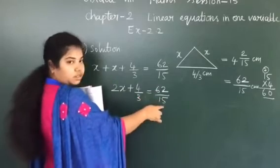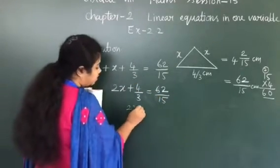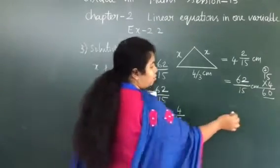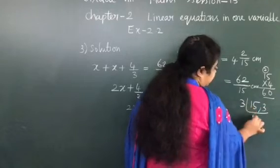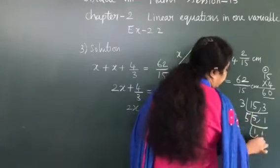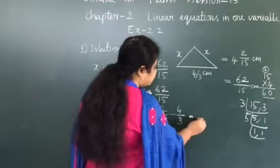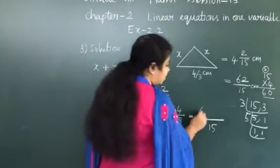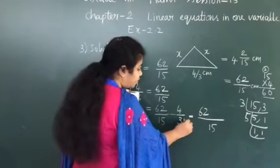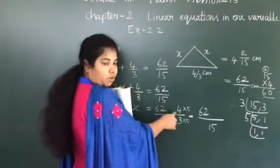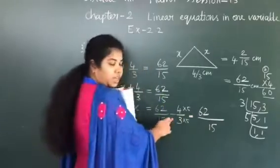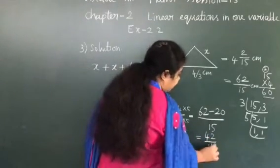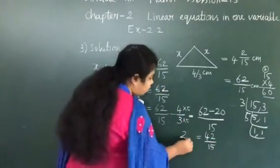Take 4/3 to the right-hand side; the sign will change to minus. So 2x equals 62/15 minus 4/3. Now take the LCM of 15 and 3, which is 15. For 62/15, multiply by 1, so it stays 62. For 4/3, multiply numerator and denominator by 5: 4 times 5 is 20, so it becomes 20/15. Therefore, 2x equals 62 minus 20 over 15, which is 42/15.